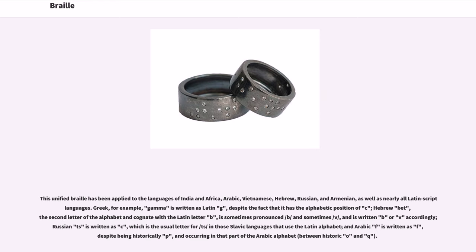This unified Braille has been applied to the languages of India and Africa, Arabic, Vietnamese, Hebrew, Russian, and Armenian, as well as nearly all Latin-script languages. Greek Gamma, for example, is written as Latin G despite having the alphabetic position of C. Hebrew Bet — the second letter of the alphabet, cognate with the Latin letter B — is sometimes pronounced /b/ and sometimes /v/, and is written B or V accordingly. Russian TS is written as C, which is the usual letter for /ts/ in those Slavic languages that use the Latin alphabet. Arabic F is written as F, despite being historically P and occurring in that part of the Arabic alphabet between historic O and Q.